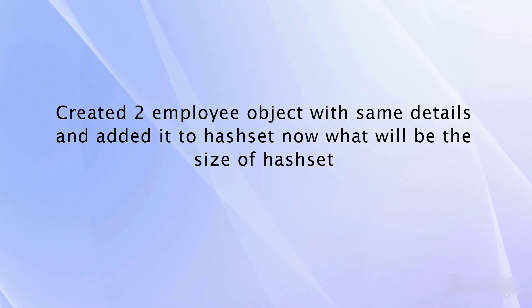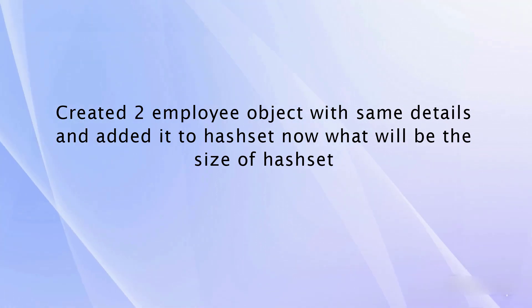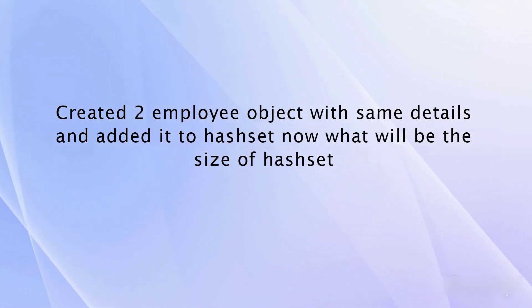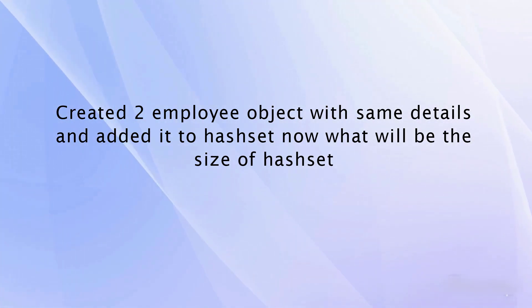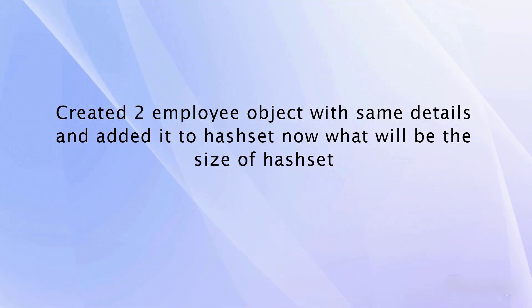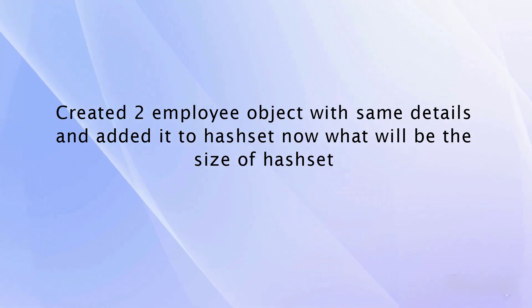In case of objects, unlike primitives which HashSet can handle by itself, two different objects would always have two different hash codes. So the HashSet won't be capable of differentiating between the two objects. Here we need to provide an implementation — how it can differentiate between these two objects. We can do this by giving the implementation for the hashCode and equals methods.